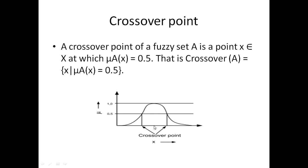The third point is the crossover point. It is in between 1 and 0 — that is 0.5 — meaning everywhere where the membership value of X is 0.5 that will be called the crossover point. So three specific terminologies: if the membership value is greater than zero that is support, if it is equals to 1 that is core, and if it is equals to 0.5 that is the crossover point.